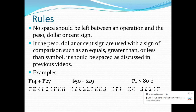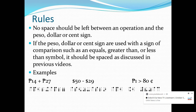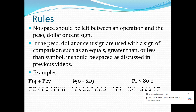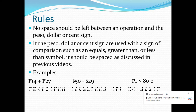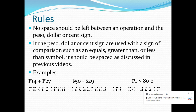For our last example, we have: 1 peso is greater than 80 cents. In Nemeth, we first write the peso sign — dot 4 on the first cell and letter P on the second cell — then number 1 (dot 2). Then we put a space, since the greater than sign is a sign of comparison. So: space, then dots 4 and 6 and dot 2 for greater than, then space again, and then 80 cents with a numeric indicator — 8, 0 — and then the cent sign: dot 4 and letter C.